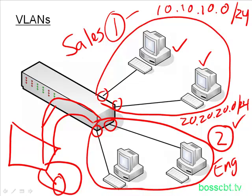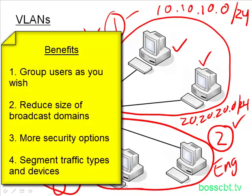Some of the benefits of using VLANs include being able to group users based on something other than physical location — for example, a common set of requirements. Going back to the naming convention, the two PCs up top are our Sales group, and the two on the bottom are Engineering. We've grouped them based on the function they provide for the company. You could also group by what applications they access. Another benefit is we've reduced the size of the broadcast domain — instead of four PCs in one domain, we have two PCs in two domains. Less traffic, less resource utilization.